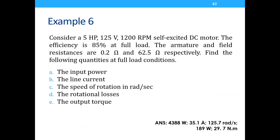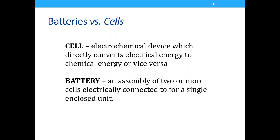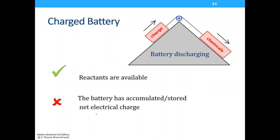Examples 5 and 6 are left as exercises — the answers are provided for self-study before the quiz. The last part of the lecture covers batteries and cells. A cell is an electrochemical device that converts electrical energy to chemical energy or vice versa. A battery is an assembly of two or more cells electrically connected as a single enclosed unit — for example, laptop batteries can be 8-cell or 16-cell.